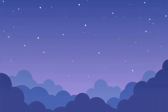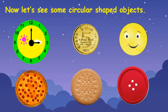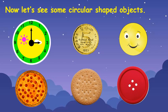Children, I am going to show you all some circular shaped objects. Now look at the first picture. What is this? It is a clock. And what is the shape of this clock? It is a circular shaped clock.